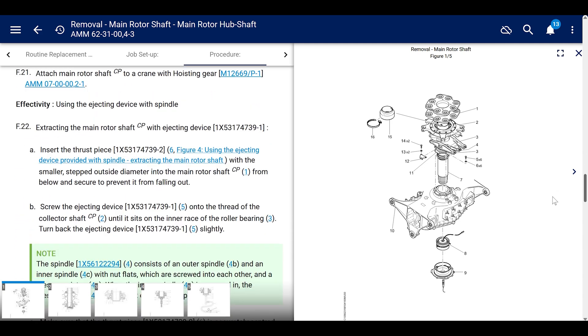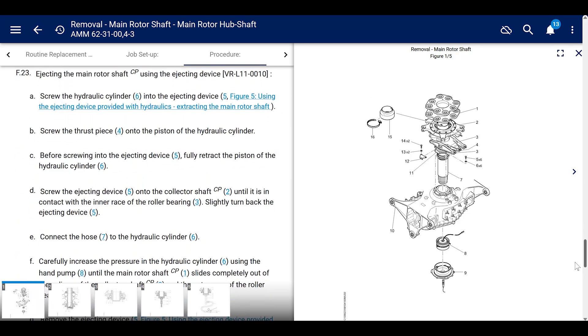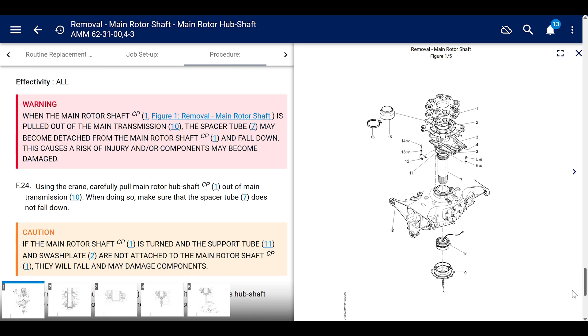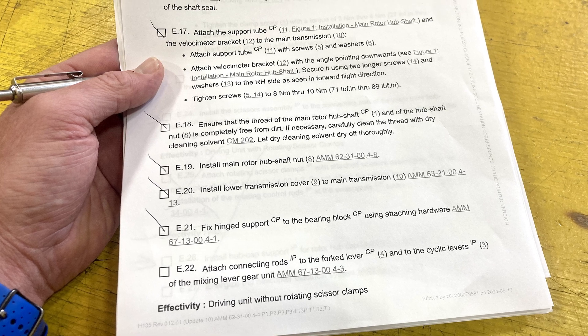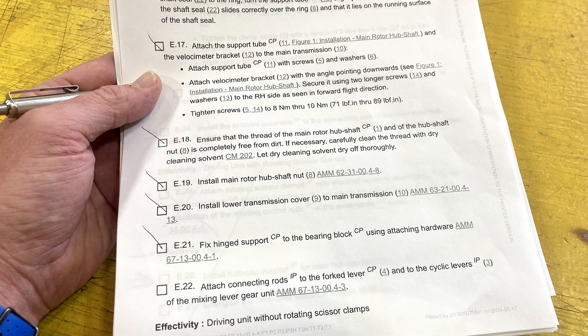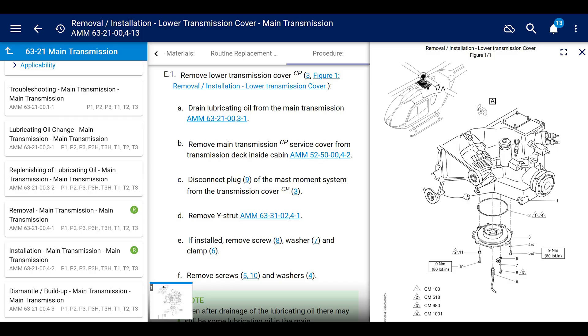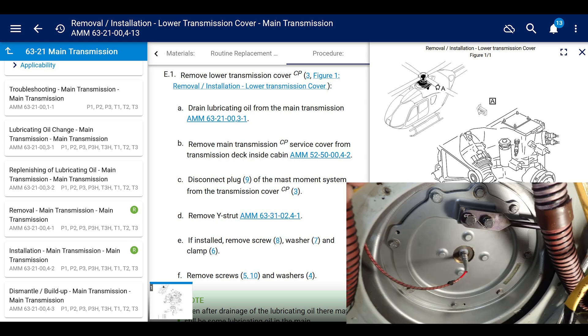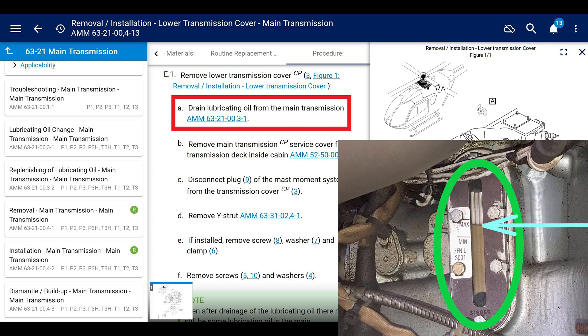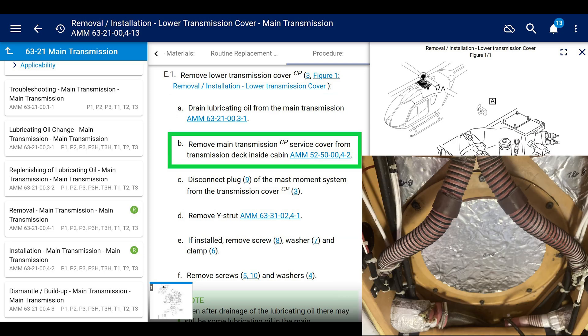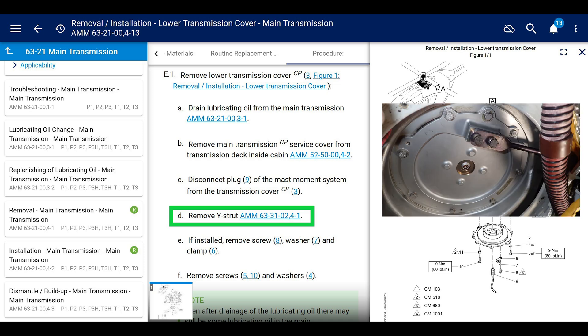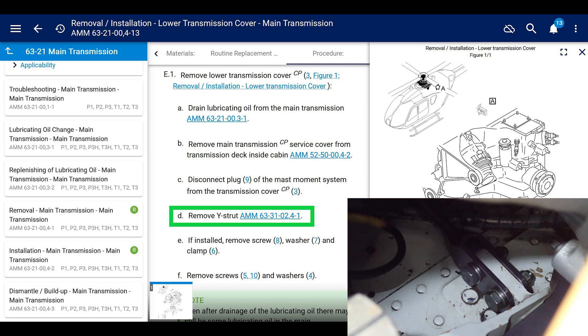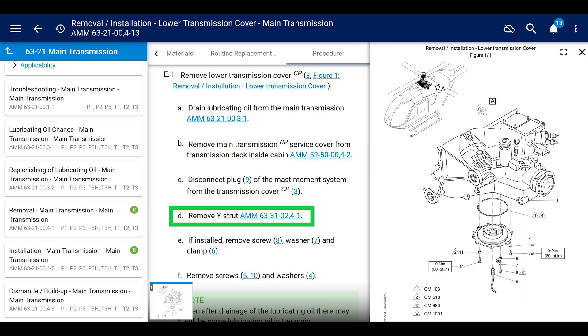Removing the main rotor hub shaft. This is AMM 6231004-3. We're not going to go line by line here, but make sure that you check every box. It doesn't tell you to drain the oil out of the transmission. So that's an obvious thing you're going to need to do. I misspoke. One of the first steps on removing the transmission, it tells you to remove the lower transmission cover. And the first step on that is to drain the lubricating oil from the transmission.